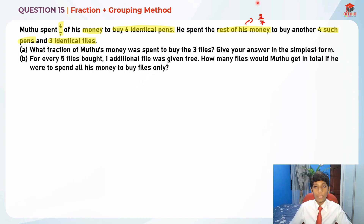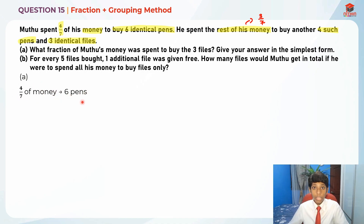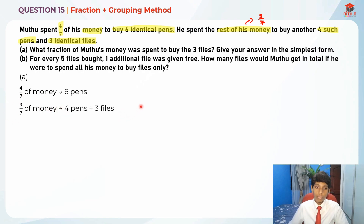For part A, four-sevenths of his money was spent on six pens, and the rest — three-sevenths — was spent on four pens plus three files. We need to find the cost of three files, so let's find the cost of one pen first. One pen is four-sevenths divided by six.